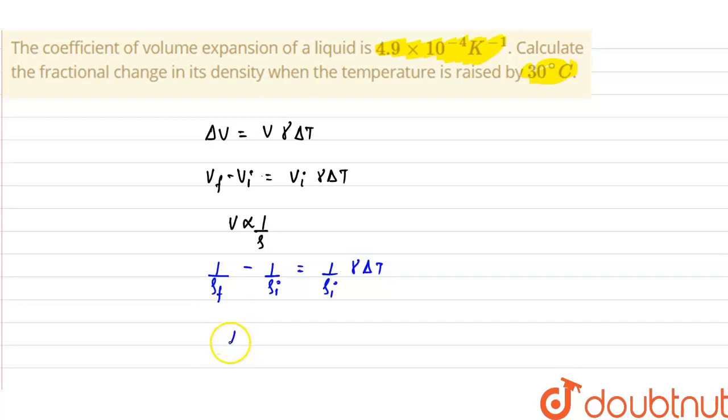From here we get 1 upon final density is equals to 1 upon initial density into 1 plus γΔT.